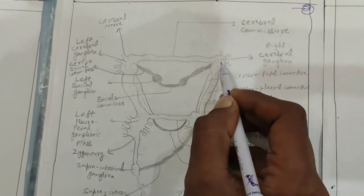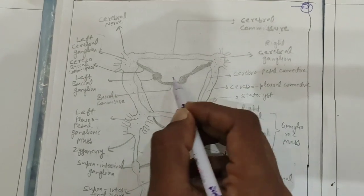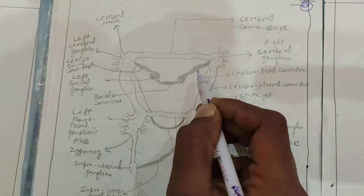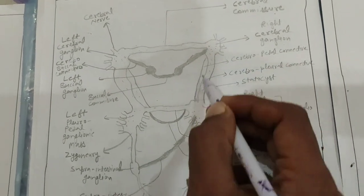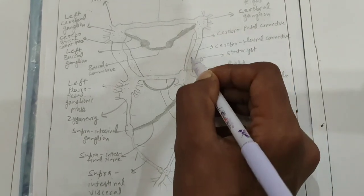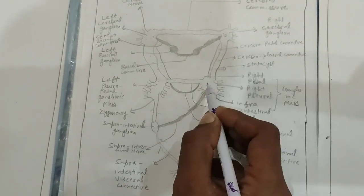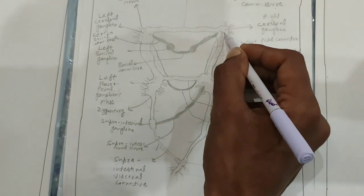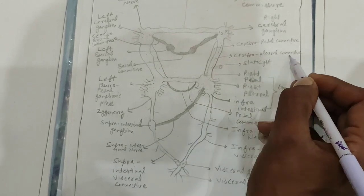The cerebral ganglia also attach with the buccal ganglia with the help of left cerebro-buccal connectives and right cerebro-buccal connectives. The cerebral ganglia also attach with the pedal ganglion via cerebro-pedal connectives, and with the pleural ganglion via cerebro-pleural connectives.